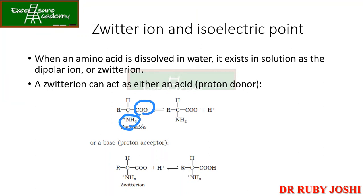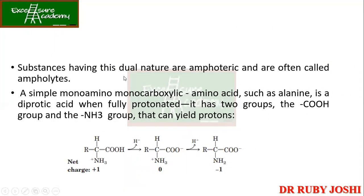Whenever an amino acid has both NH3 plus and COO minus it is called a zwitterion or dipolar ion. The net charge of this zwitterion is zero, because the NH3 plus and COO minus cancel out. A zwitterion can act as either an acid — a proton donor from NH3 plus — or a proton acceptor, accepting H plus into the COO minus.